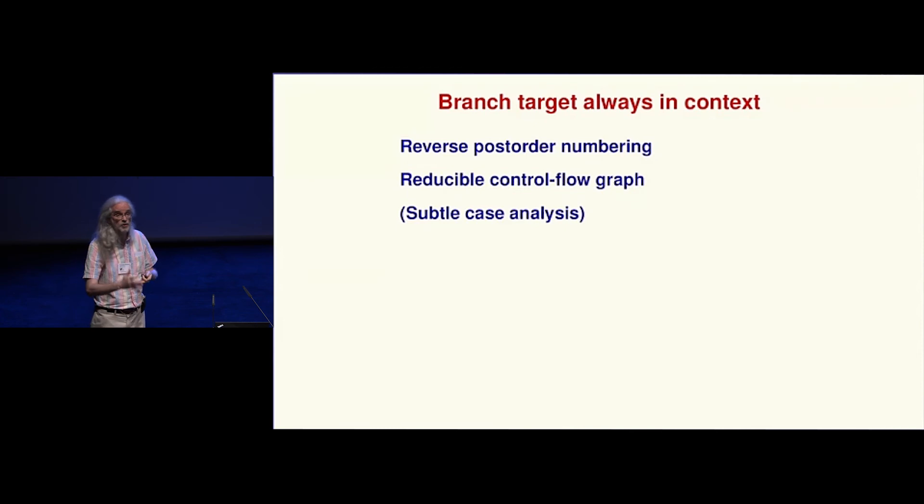The key properties are the reverse post-order numbering that comes from the depth-first search: if I need to get from one place to the other, if I'm going forward things are in the right place. If I'm going backward I'm going backward to a loop header. What if I'm going backward to something that isn't a loop header? Well in that case the control flow graph wasn't reducible, and we know that the algorithm doesn't work. If necessary we first have to convert an irreducible control flow graph to something that's reducible. The argument in the paper is a little bit depressing because there are a lot of cases, but it was the best I could do.